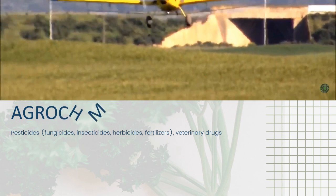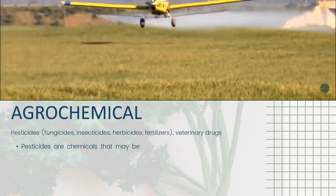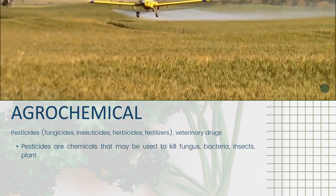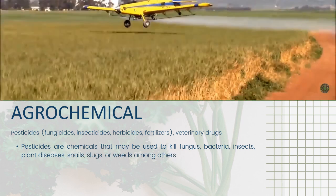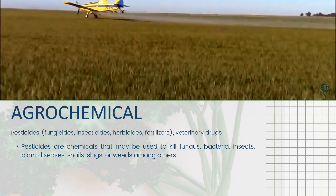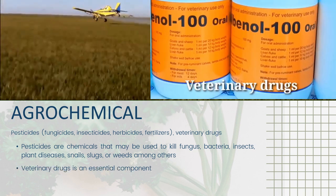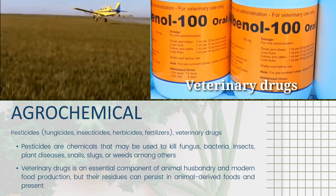Looking further into agrochemical types, which consist of pesticides and veterinary drugs — pesticides are chemicals that may be used to kill fungus, bacteria, insects, plant diseases, snails, slugs, or weeds, among others. Veterinary drugs are an essential component of animal husbandry and modern food production, but their residues can persist in animal-derived foods and present potential food safety risks.